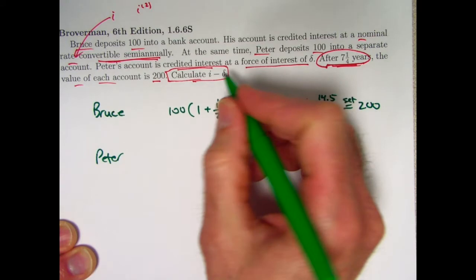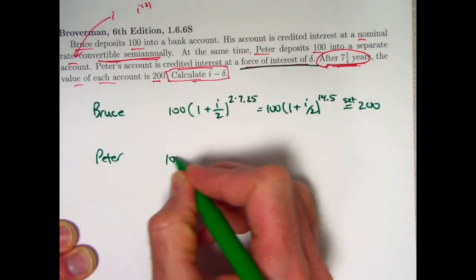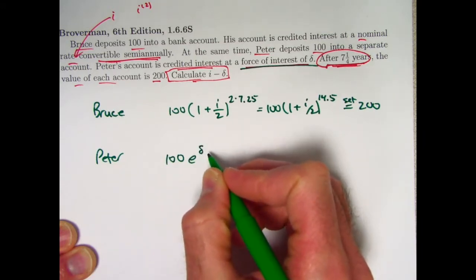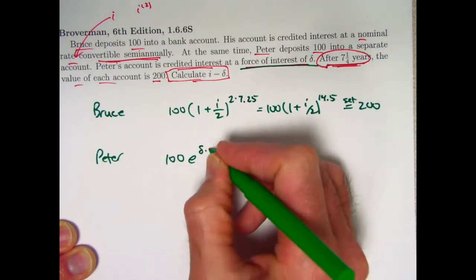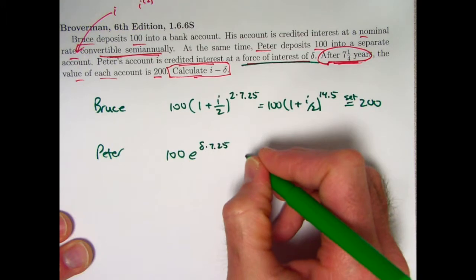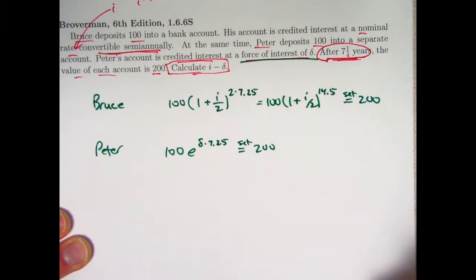With Peter, Peter's account is credited interest at a force of interest delta. That means the future value is this: 100 e to the delta times t. Plug in t equals 7.25. There we have it. And set that equal to 200 as well. And now you just solve that for delta. And finally, after solving for both i and delta, just calculate the difference then.